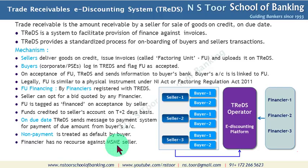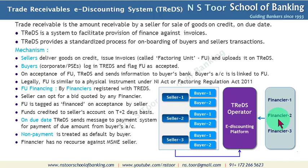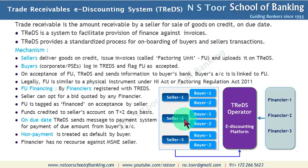The financer has no recourse against the MSME seller. Once the financer has given the money, this money cannot be recovered back from the seller. The credit risk in this transaction entirely transfers to the financer once it is financed, because it is on a non-recourse basis — meaning the amount cannot be recovered from the seller once it is credited to the seller's account.